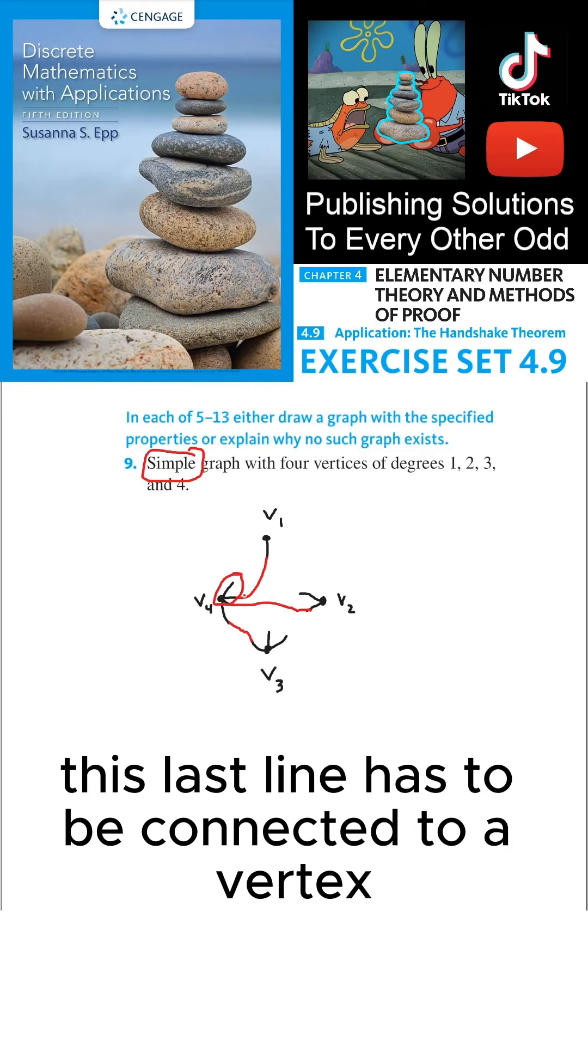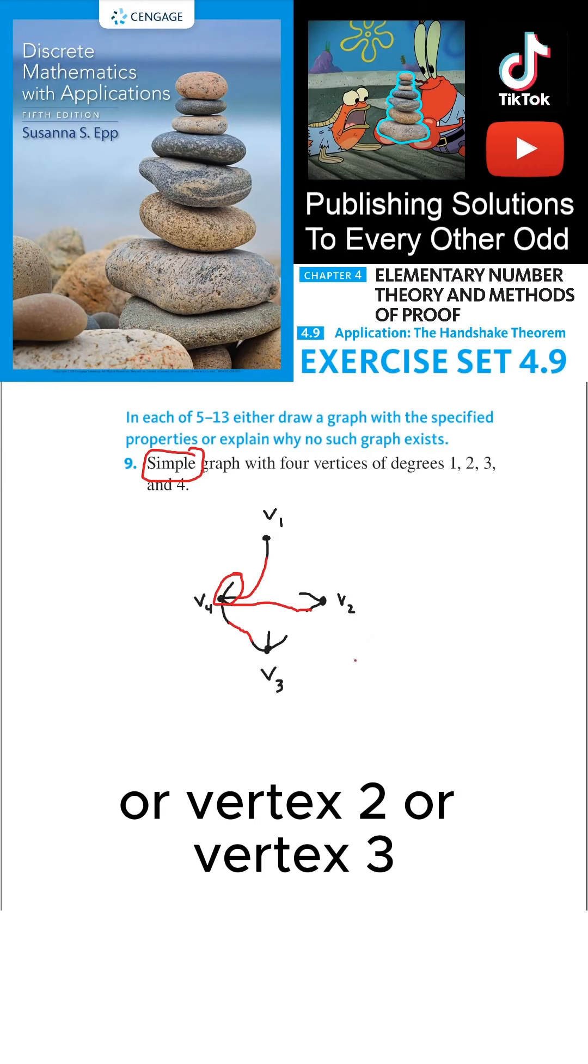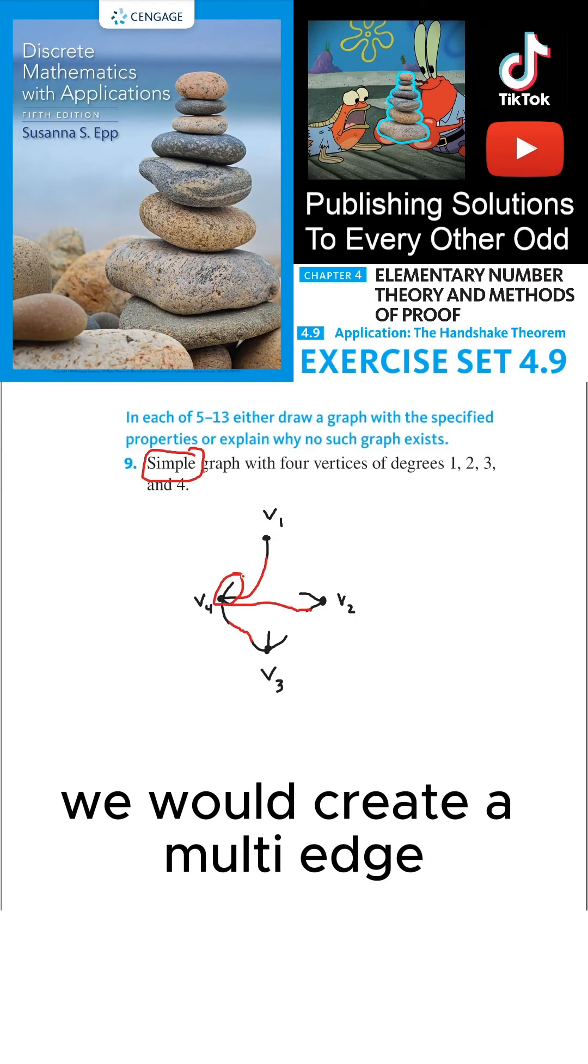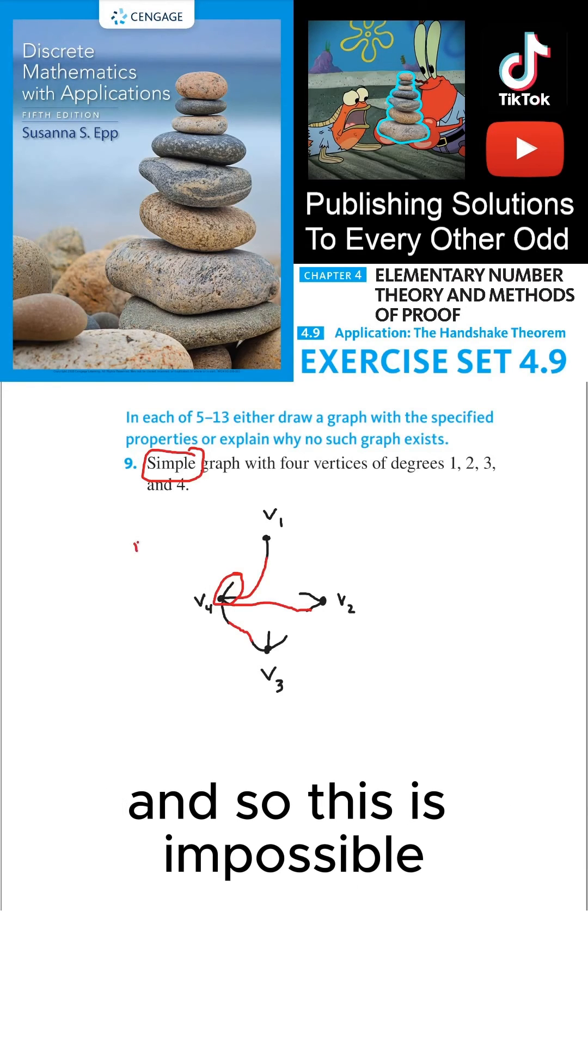This last line has to be connected to a vertex, but if we connect it to vertex 1, or vertex 2, or vertex 3, we would create a multi-edge. And we can't connect V4 with itself, that would create a loop. And so this is impossible.